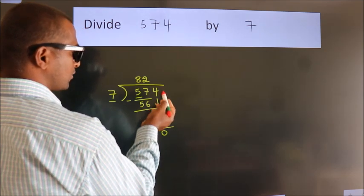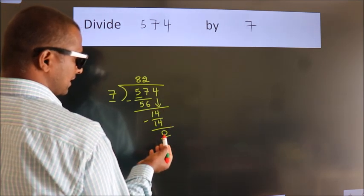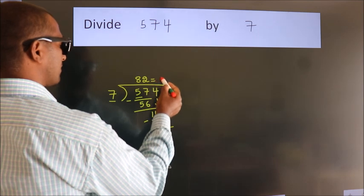After this, there are no more numbers to bring down. We got remainder 0. So this is our quotient.